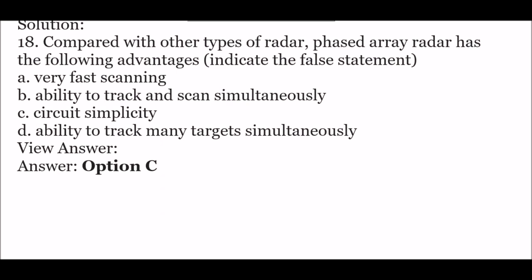Next question: compared with other types of radar, phased array radar has the following advantages — indicate the false statement. Option A: very fast scanning, option B: ability to track and scan simultaneously, option C: circuit simplicity, option D: ability to track many targets simultaneously. The right answer is option C — circuit simplicity is the false statement.